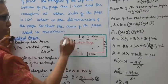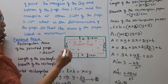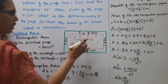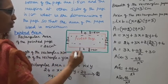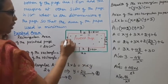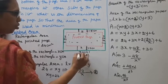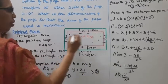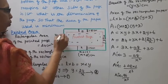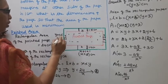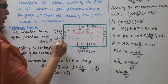The printed page is rectangular and the paper is rectangular. The printed page has length x and breadth y. The paper's length is x plus 1 plus 1, that is x plus 2 cm. The breadth of the paper is y plus 1.5 plus 1.5, that is y plus 3 cm.